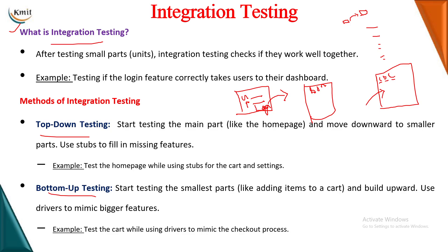Bottom-up testing is like starting from the inner parts and then coming out. For example, you start by directly going to adding items to the cart and check whether you are successfully able to add items. Then you go to the payment gateway, do a fake payment, and check whether payment is getting processed successfully. Going from the inner part to the outer part is bottom-up testing.